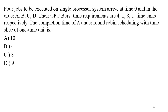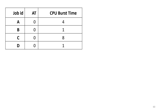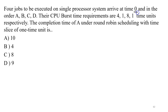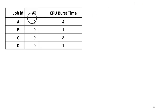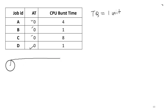We have drawn a table based on the content of the question. We have four jobs A, B, C, and D with CPU burst times 4, 1, 8, and 1. It is given that all four jobs arrive at time zero, so in the arrival time column we have put zero. The time quantum, that is the time slice of one unit, was also given in the question. Now let's sketch the Gantt chart.